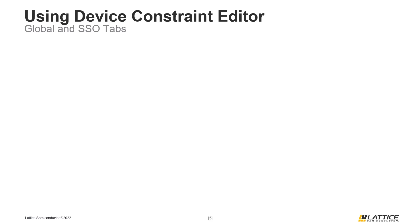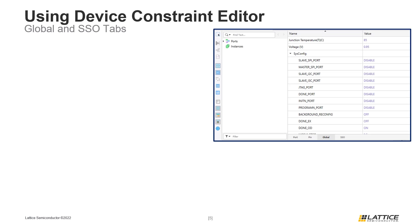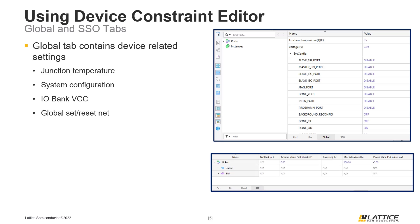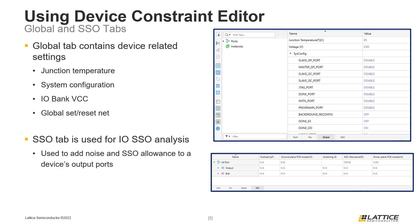The Device Constraint Editor's Global tab contains several settings that can be used to configure how a device operates. Some of these settings include junction temperature, system configuration settings like whether or not to enable a device's JTAG port, Iobank VCCC settings, as well as Global Set and Reset Net configuration. The SSO tab is used to configure parameters for SSO analysis for a project. The SSO tab can be used to add ground plane PCB noise, SSO allowance, and power plane PCB noise to a project's output ports. The exact contents of this tab depend on the project and how it was synthesized.